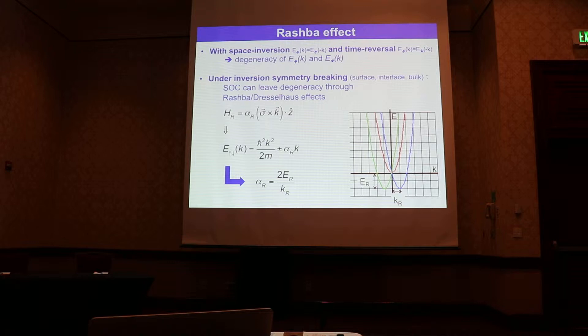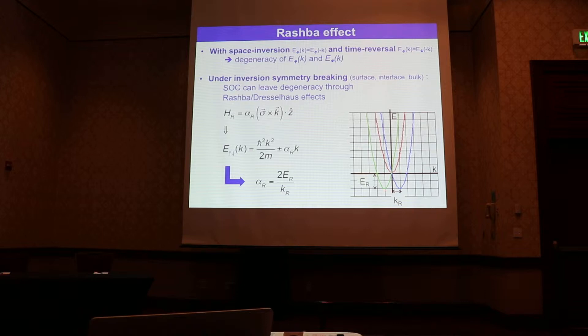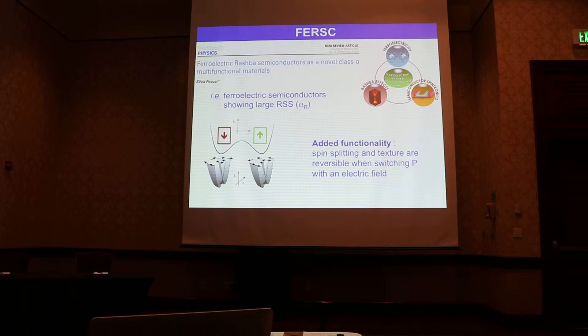In the case of a simple parabola, you can estimate the linear Rashba parameter as alpha_R = 2E_R / k_R, where E_R is the energy shift of the band and k_R is the k-shift of the band.